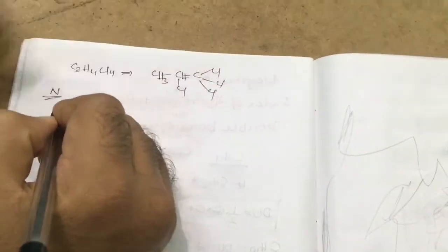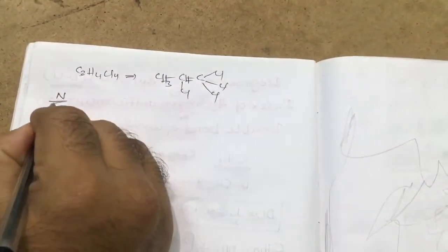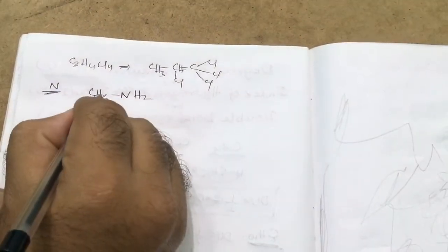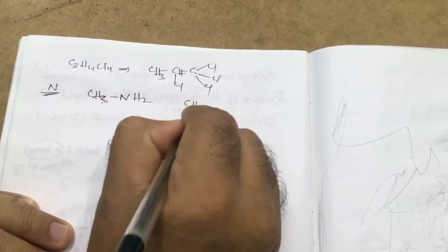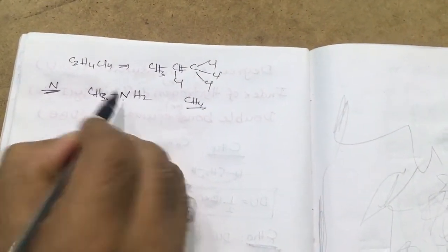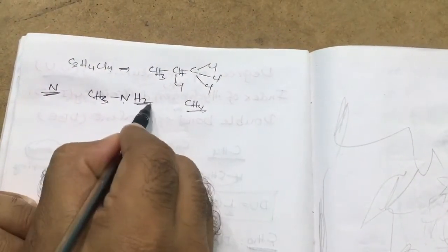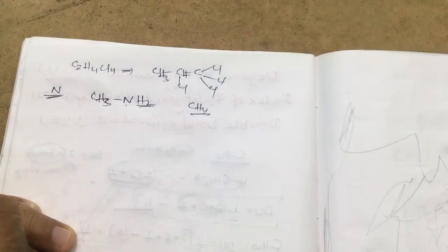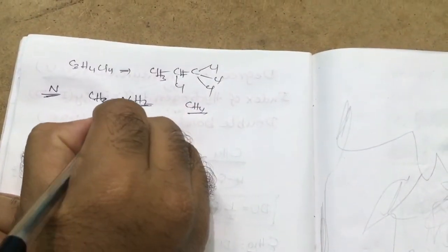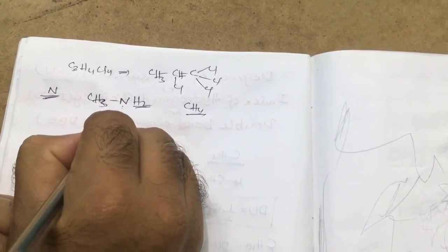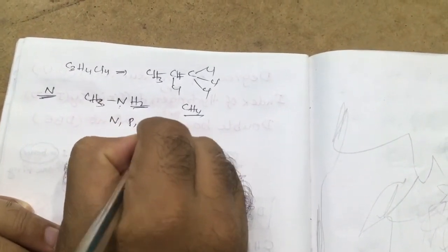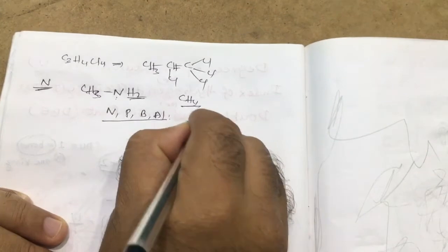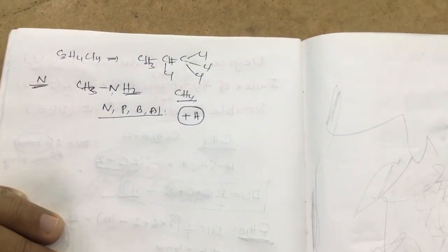If nitrogen or any trivalent atom is present — for example CH3NH2 — consider that methane has 4 hydrogens. When nitrogen (a trivalent atom) is attached, it brings 2 extra hydrogens, meaning nitrogen adds 1 extra hydrogen compared to carbon alone. Trivalent atoms such as nitrogen, phosphorus, boron, and aluminum increase the hydrogen count by 1.